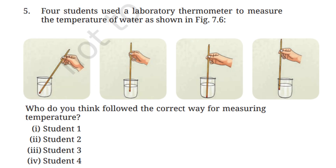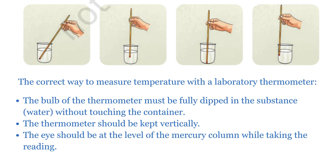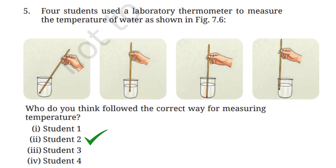Question 5: Four students used a laboratory thermometer to measure the temperature of water as shown in figure 7.6. Who followed the correct way for measuring temperature? The bulb of the thermometer must be fully dipped in the substance without touching the container, and the thermometer should be kept vertically. Students 3 and 4 have their thermometers touching the container, which is incorrect. Student 1 is not holding the thermometer vertically, which is also incorrect. So only student 2 follows the correct method — option 2 is the correct answer.